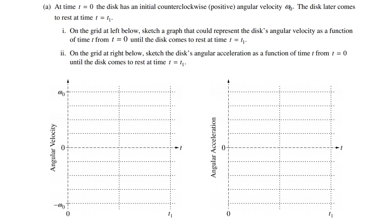So once again, part A: at time t equals 0, the disc has an initial counterclockwise positive angular velocity omega naught. The disc later comes to rest at time t equals t1. On the grid below, sketch a graph that could represent the disc's angular velocity as a function of time from t equals 0 until the disc comes to rest at time t equals t1.